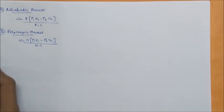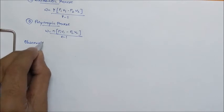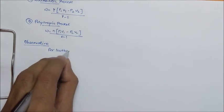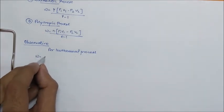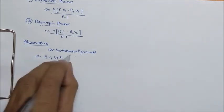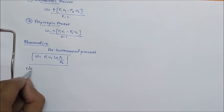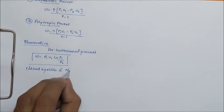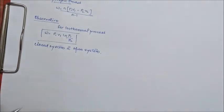Observation for isothermal process: W equals P1V1 ln(P1 by P2), which we have proved earlier, is same for closed system and open system. And you will say how is it possible? Let me show you how it is possible.